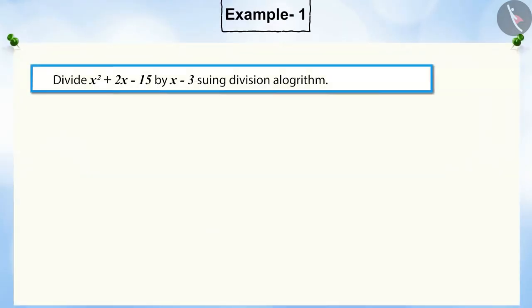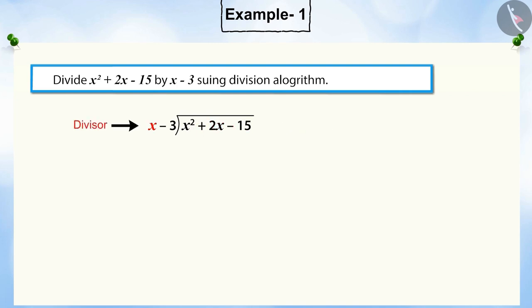Divide x squared plus 2x minus 15 by x minus 3 using the division algorithm. In this question, x squared plus 2x minus 15 is the dividend and x minus 3 is the divisor.